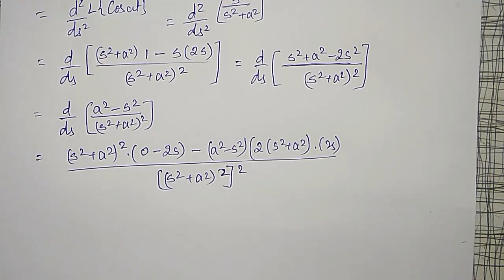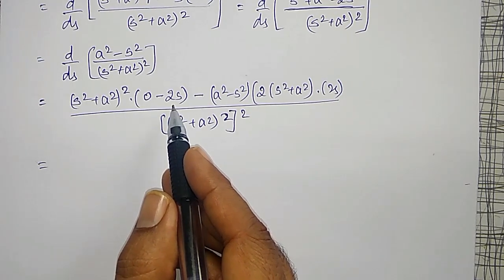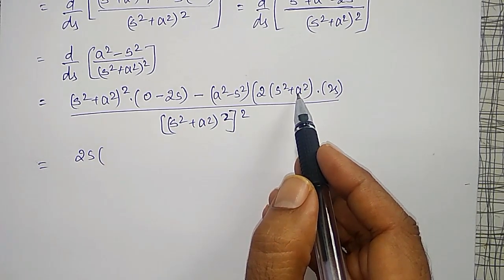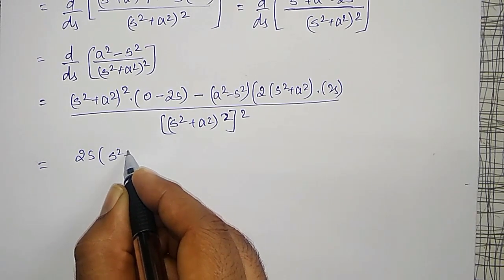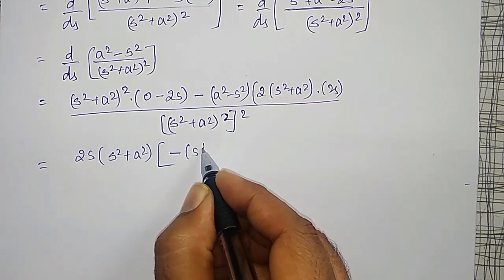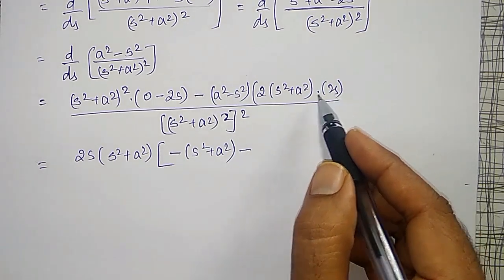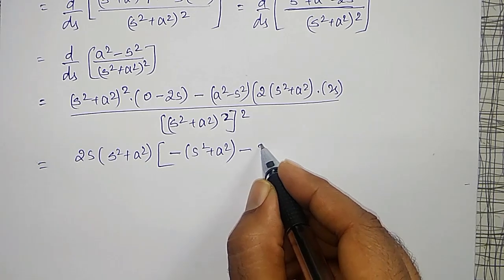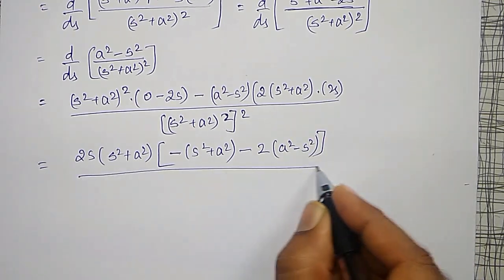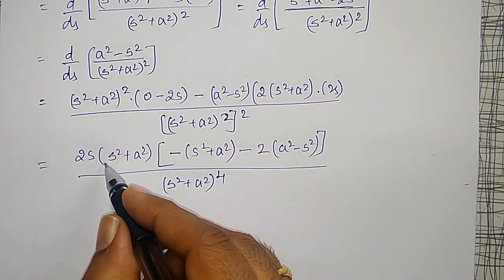Simplifying: taking 2s and s squared plus a squared common, we get minus of s squared plus a squared times minus 2 times a squared minus s squared, divided by s squared plus a squared to the power 4. One s squared plus a squared cancels. The final answer becomes 2s times s squared minus 2s squared plus s squared minus a squared minus 2a squared, divided by s squared plus a squared cubed. Simplifying: 2s into s squared minus 3a squared, divided by s squared plus a squared cubed.